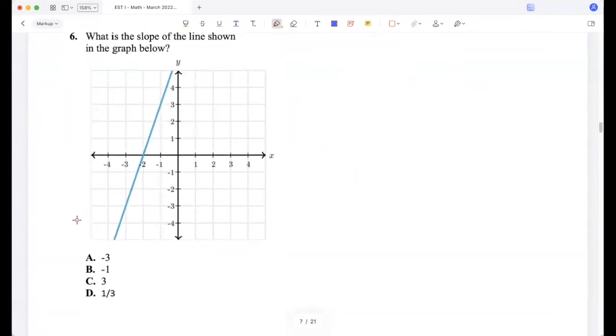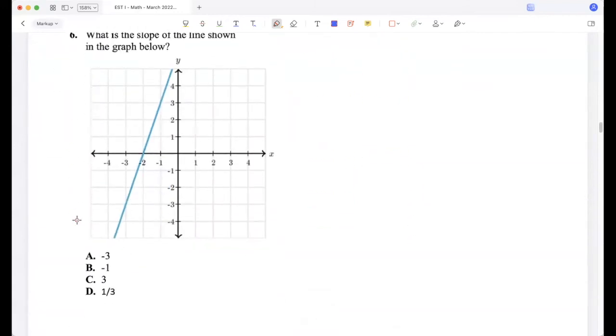What is the slope of the line shown? So this is an upward line, so the slope is positive, so it can't be A or B. And the y-intercept is greater than the x-intercept absolute value, so the slope has to be greater than 1. So it has to be 3.